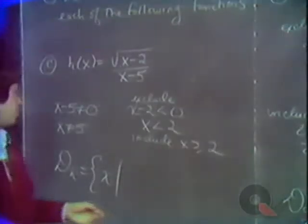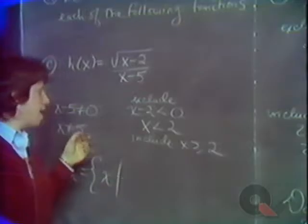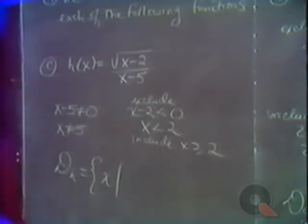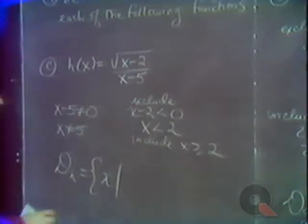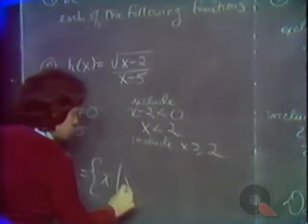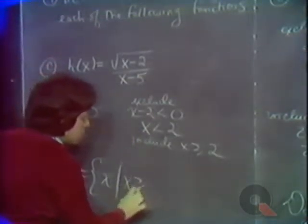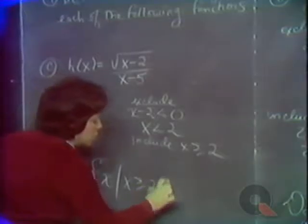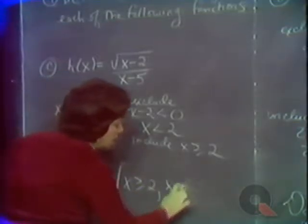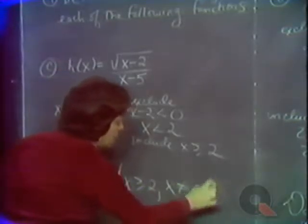We have to throw out 5 and all those values less than 2. So the domain is all values greater than or equal to 2, but not 5.